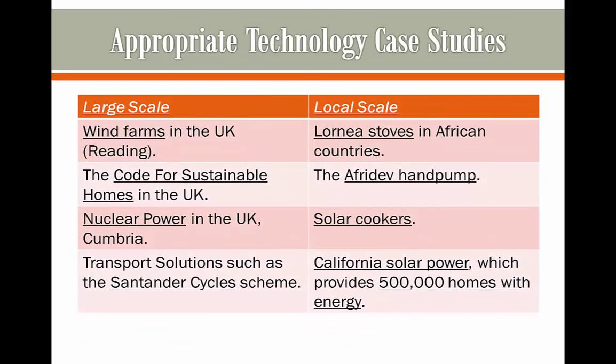Appropriate Technology case studies. Here we have some large-scale and small-scale case studies. For example, in Reading in the UK they use wind farms to generate electricity. We have the Code for Sustainable Homes in the UK, nuclear power used in the UK, and Santander cycles used in the UK to reduce energy used. Local scale examples include Lorena stoves in African countries, the AfriDev hand pump in Sub-Saharan Africa, the use of solar cookers to use less fuel wood, and California solar power — a huge area powering 500,000 homes using a massive area of solar panels concentrating the Sun's energy.